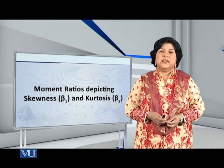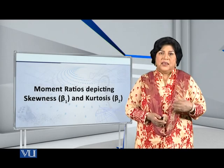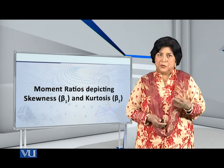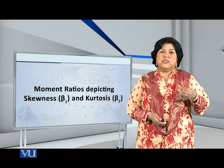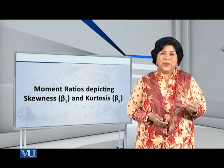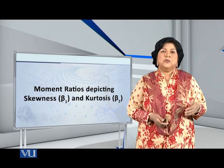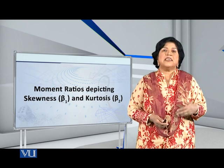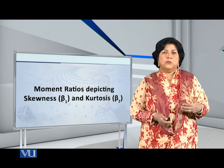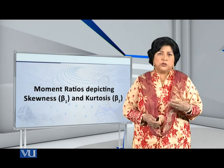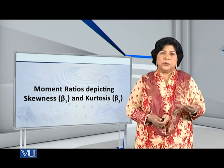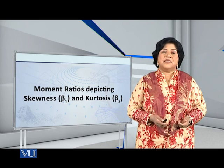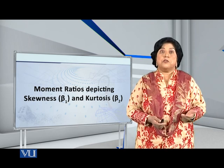Here students, let me present to you moment ratios. Moment ratios, beta 1 and beta 2. Beta 1 is connected with the concept of skewness. Beta 2 is connected with the concept of kurtosis. Let's begin with the concept of skewness.